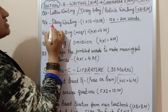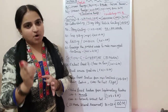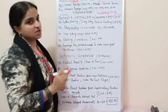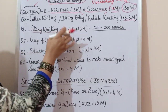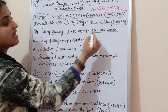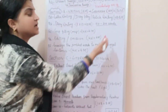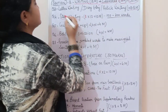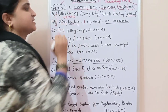Question number four is always story writing. An outline of a story is given — some main hints are provided — and you have to use those hints to develop a story. It is one question carrying ten marks. The word limit is 150 to 200 words, though you can go up to 220 to 230 words if you are writing a good story. You must use the hints given in the question paper. Questions three and four complete the writing section of 18 marks.